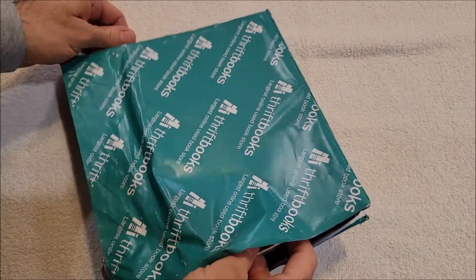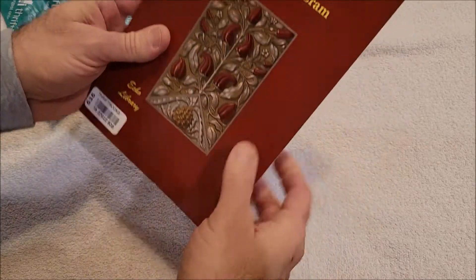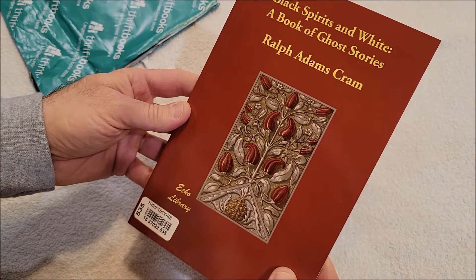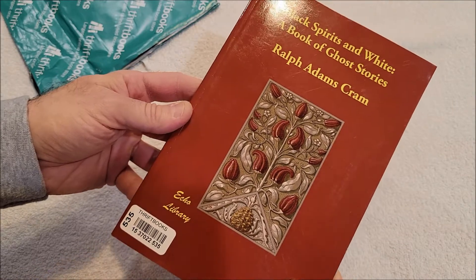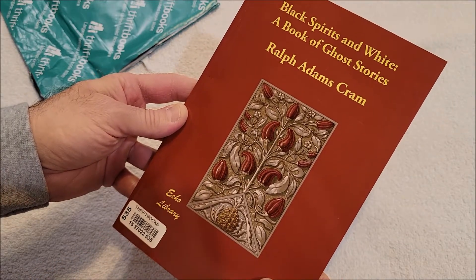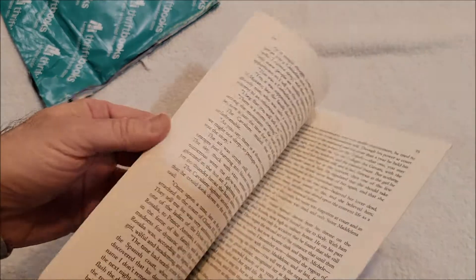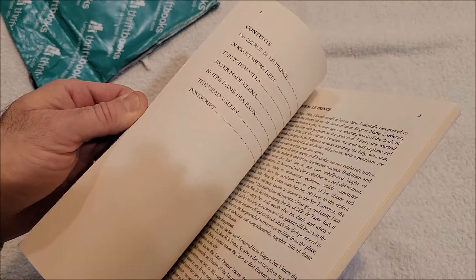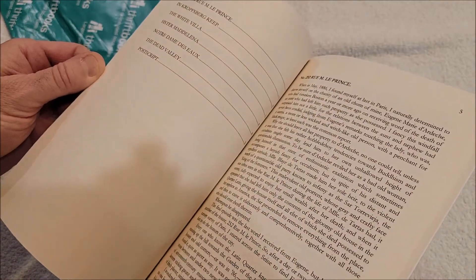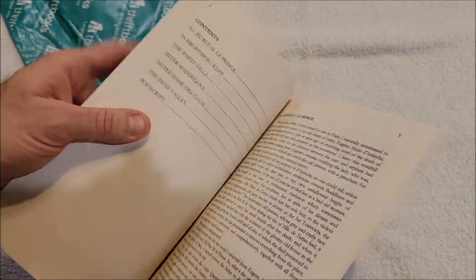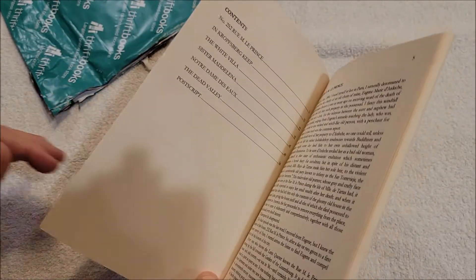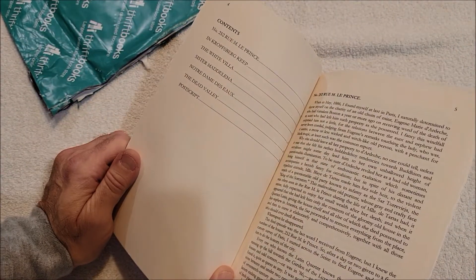Black Spirits and White: A Book of Ghost Stories by Ralph Adams Cram. I don't remember ordering this. Book of ghost stories: Number 252, Rue Monsieur-le-Prince, In Kropfsberg Keep, The White Villa, Sister Maddelina, Notre Dame des Eaux, The Dead Valley, and Postscript.